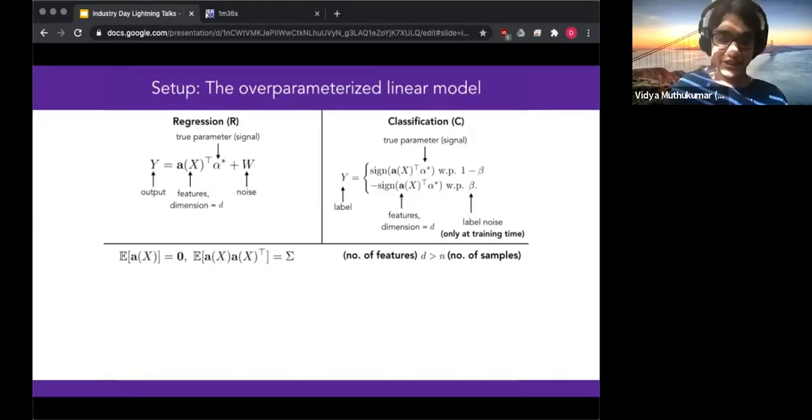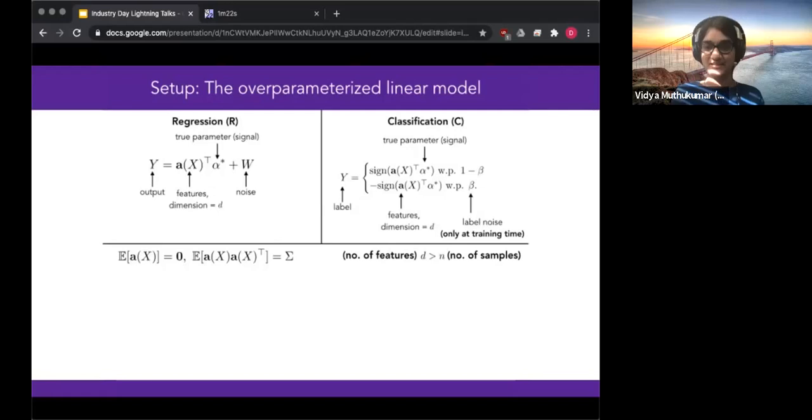So in this high-dimensional regime, the number of features is greater than the number of samples. And we're also assuming random training data. And an important quantity that will pop up again and again is this covariance matrix or the second moment matrix of the data.